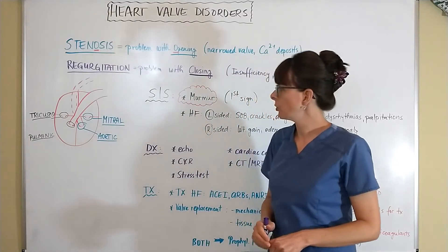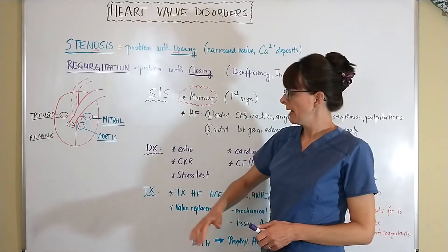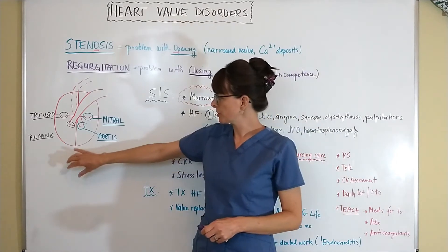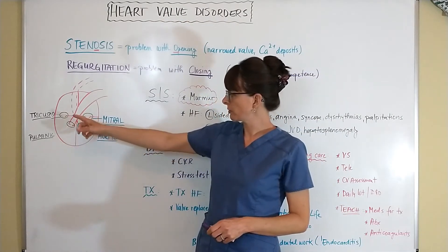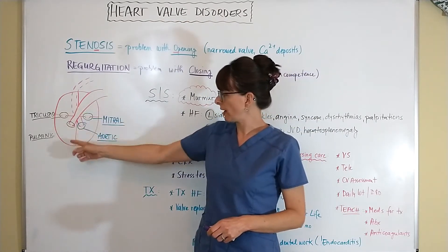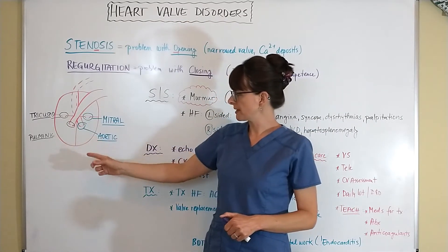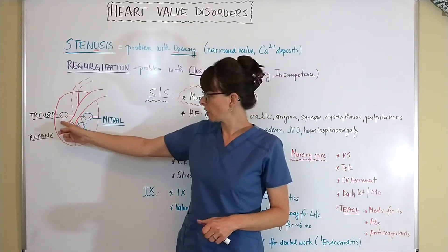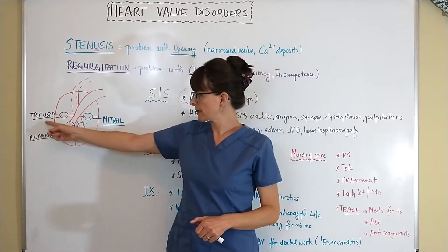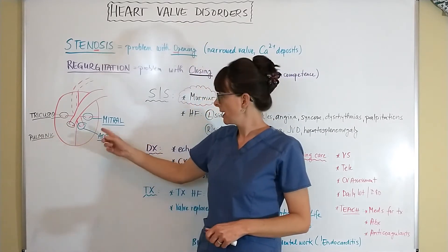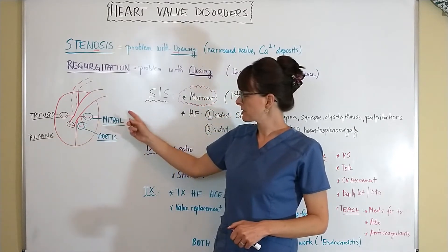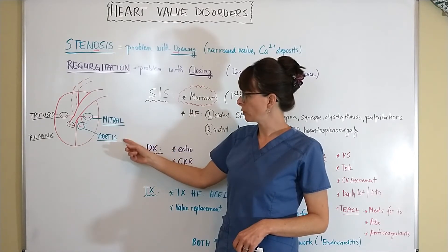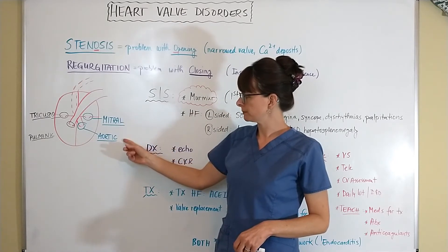Looking at the anatomy of the heart: on the right side we have the tricuspid and pulmonic valves, and on the left side we have the mitral and aortic valves.